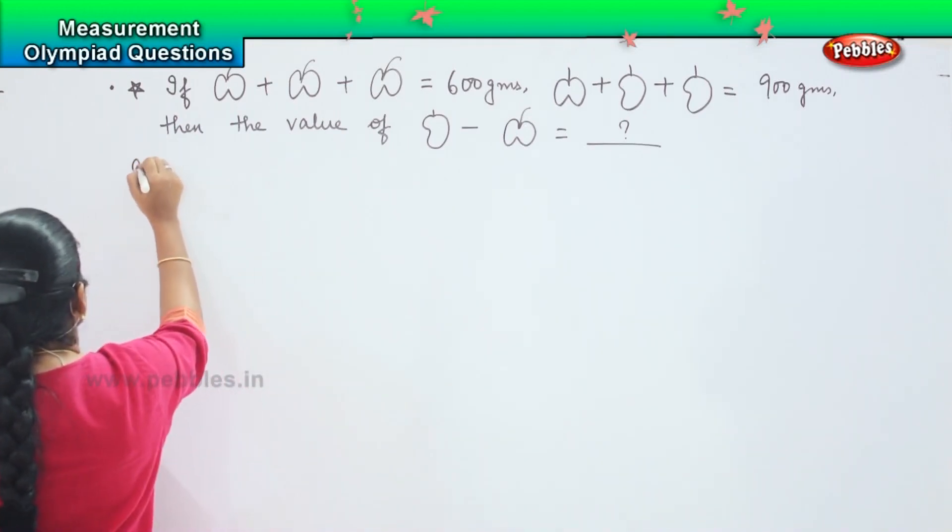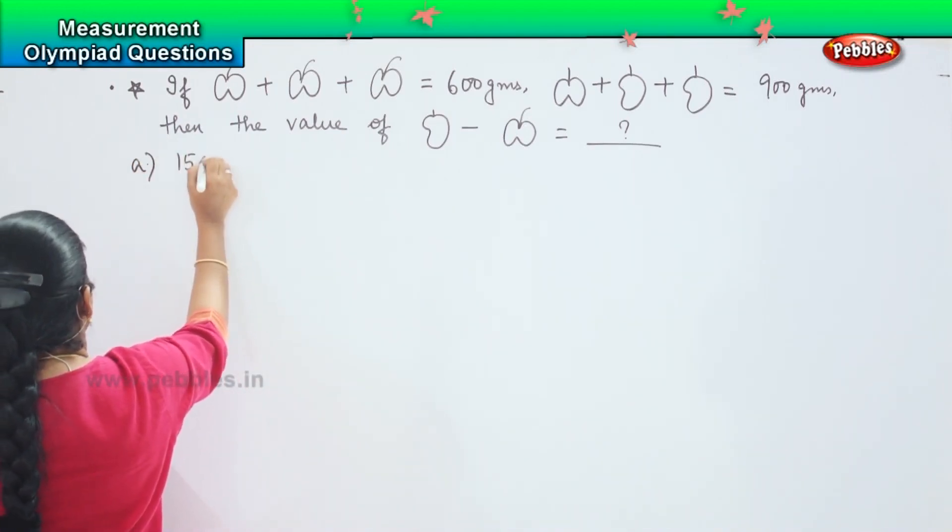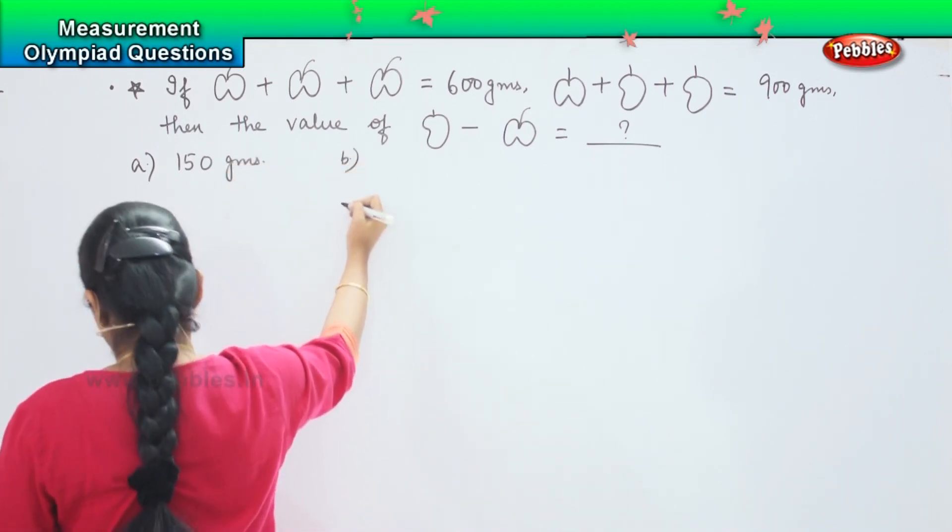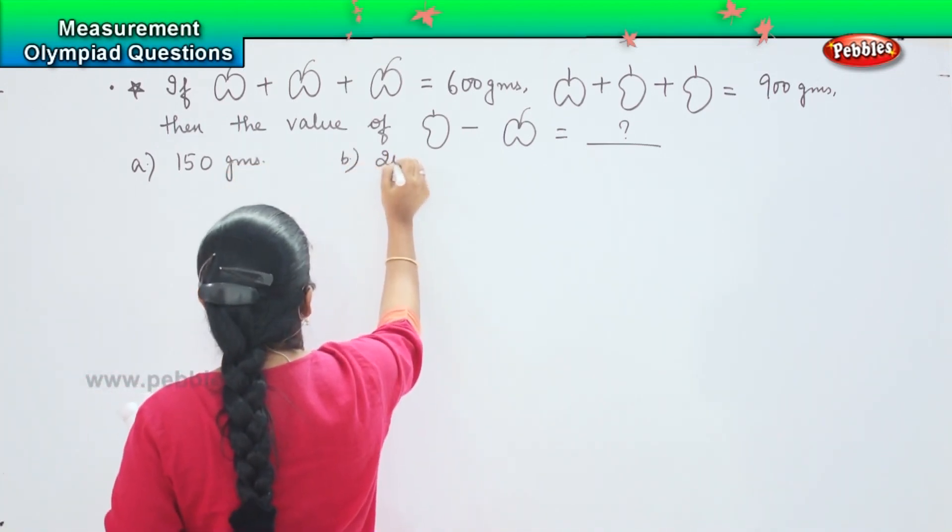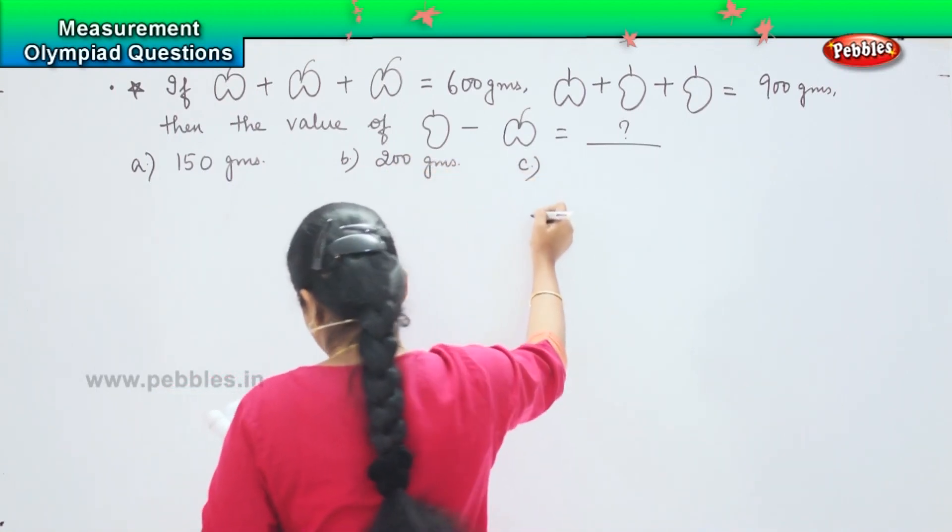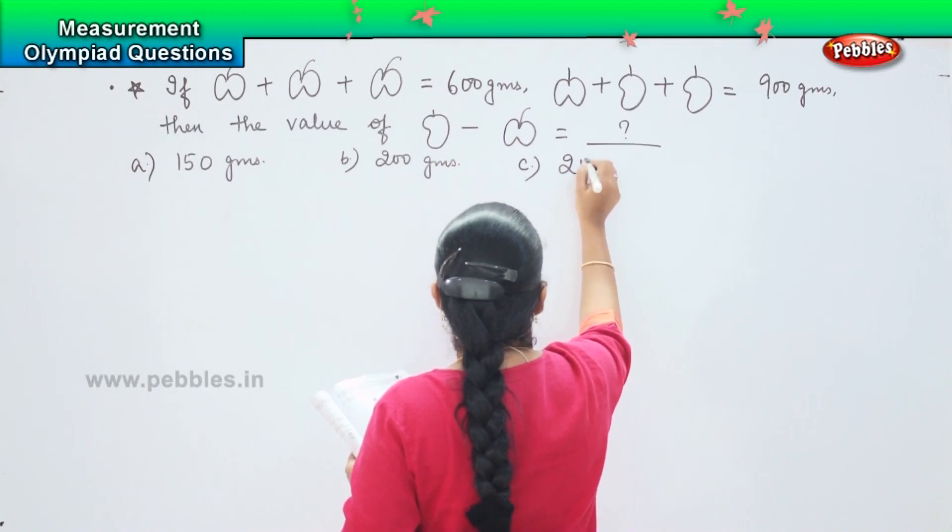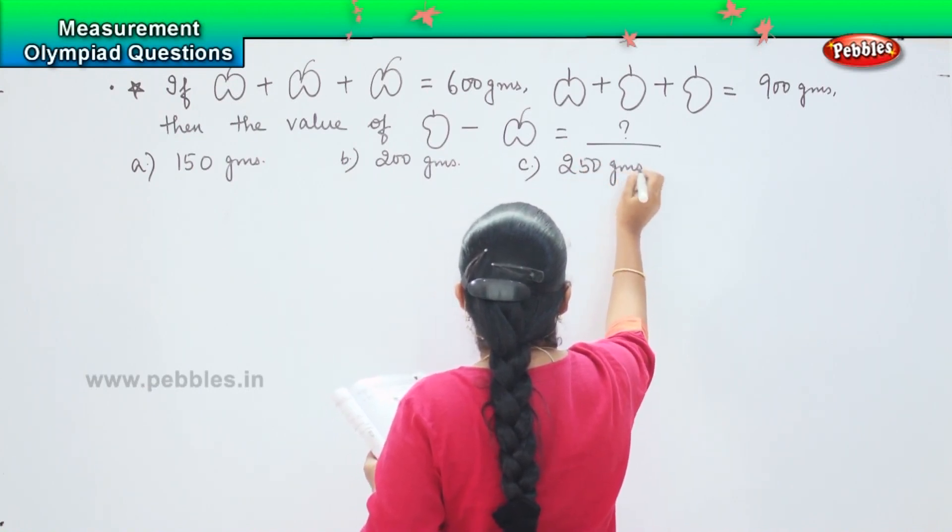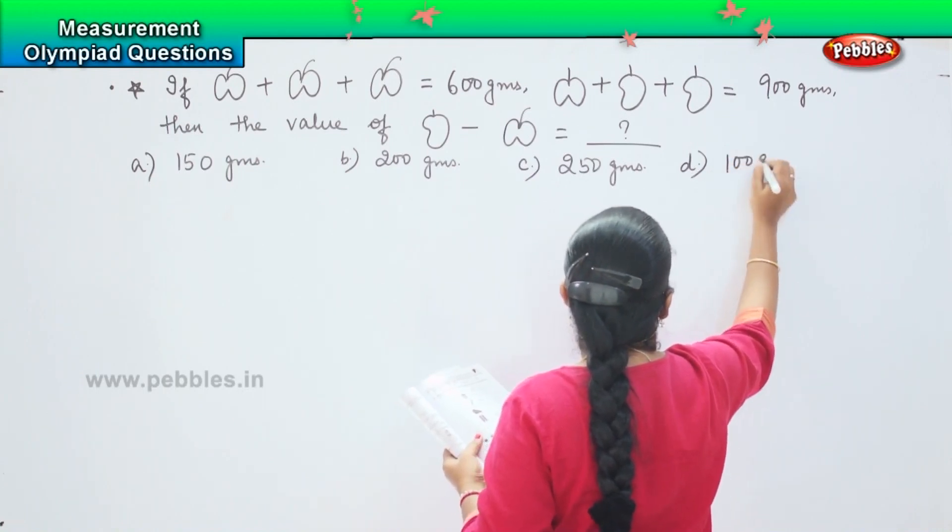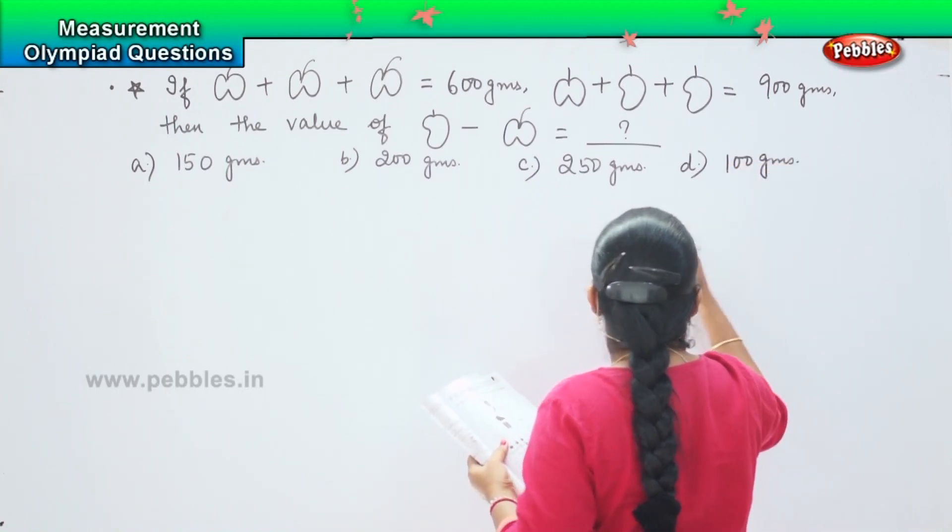And your answers are 150 grams, option B 200 grams, option C 250 grams, and option D 100 grams.